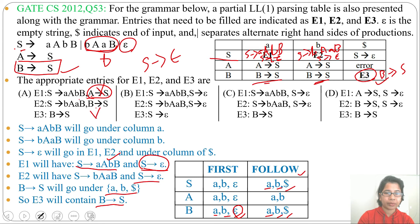Option B: E1 has S → AABB — correct. S → epsilon — correct. E2 has S → BAAB — correct. S → epsilon — correct. But E3 has S → epsilon, which is wrong. E3 should contain B → S. So option B is wrong.